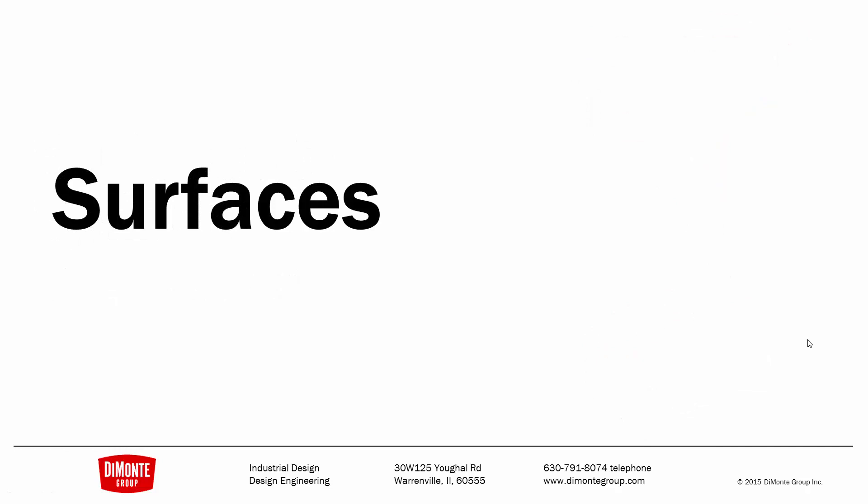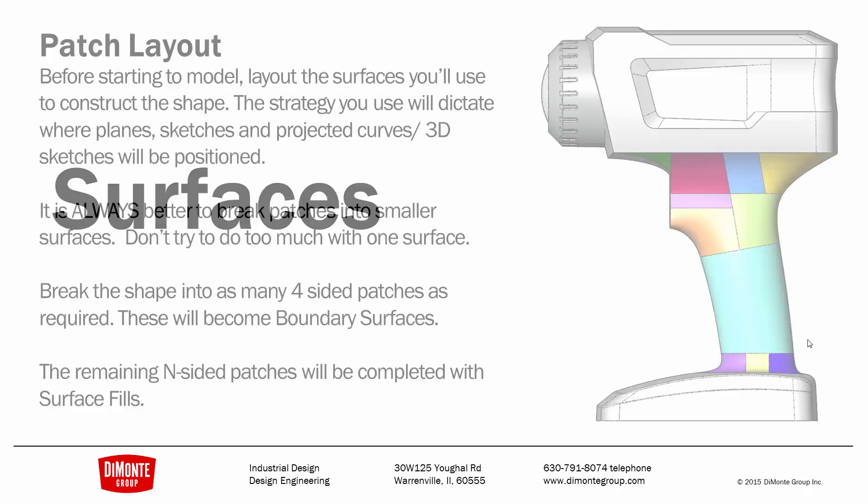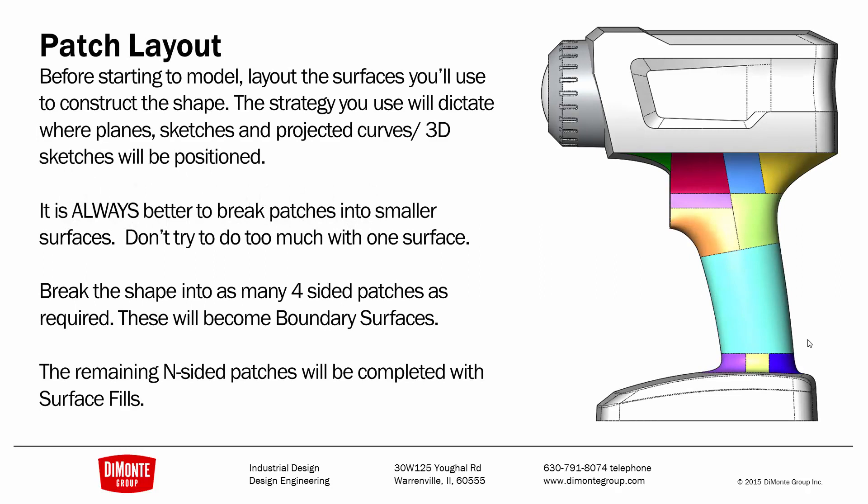In previous videos, we took a look at some of the spline tools and how we could create really clean curves to build our surfaces from. Now we're going to start taking a look at the actual surface tools themselves. But before we do any surface modeling, we need to create a patch layout. This is going to be the framework that we use to build all of our surfaces from. We're going to take the large, complicated shape of the handle and instead of trying to create it with one surface, we'll break it down into smaller four-, five-, and three-sided surfaces.